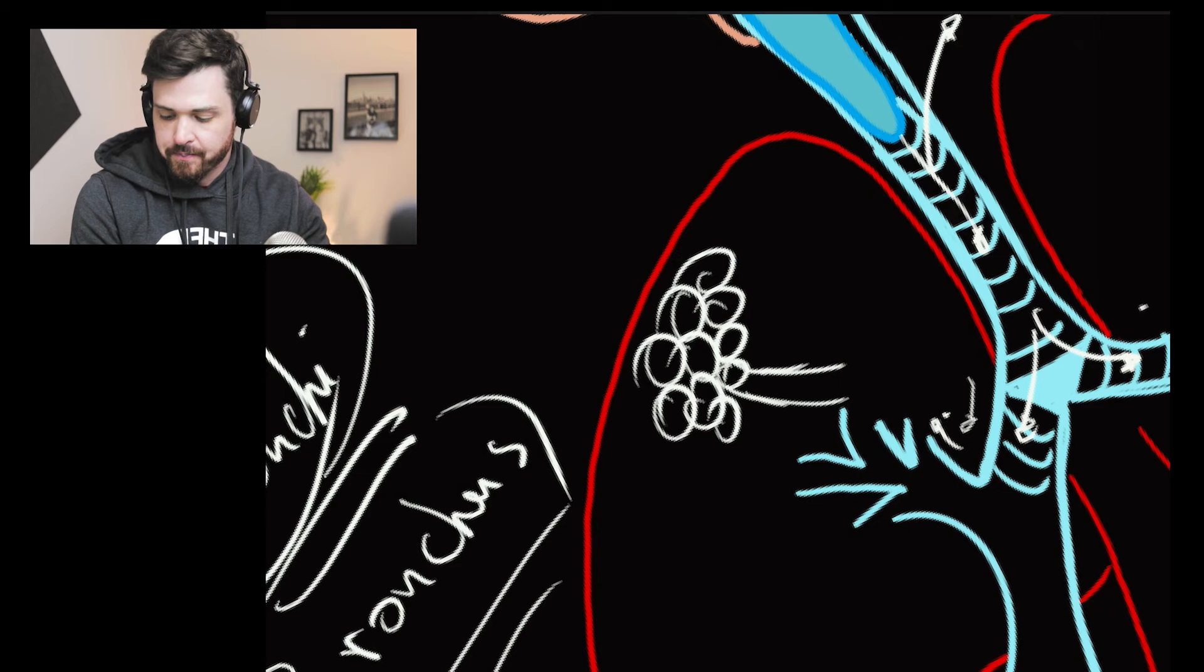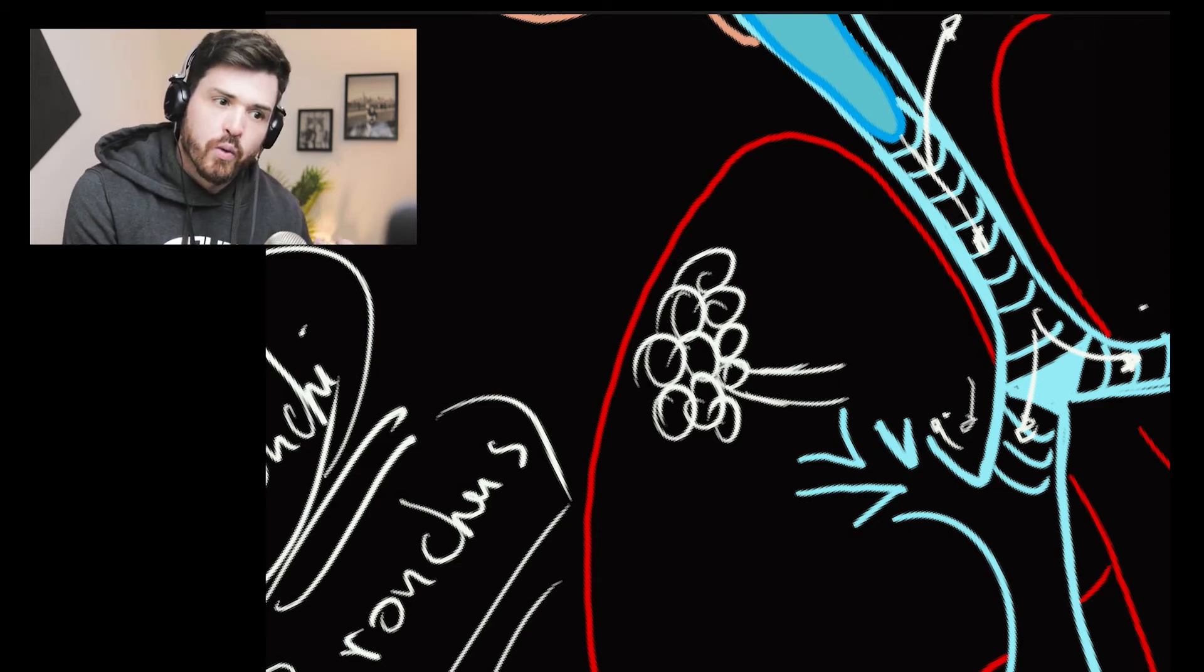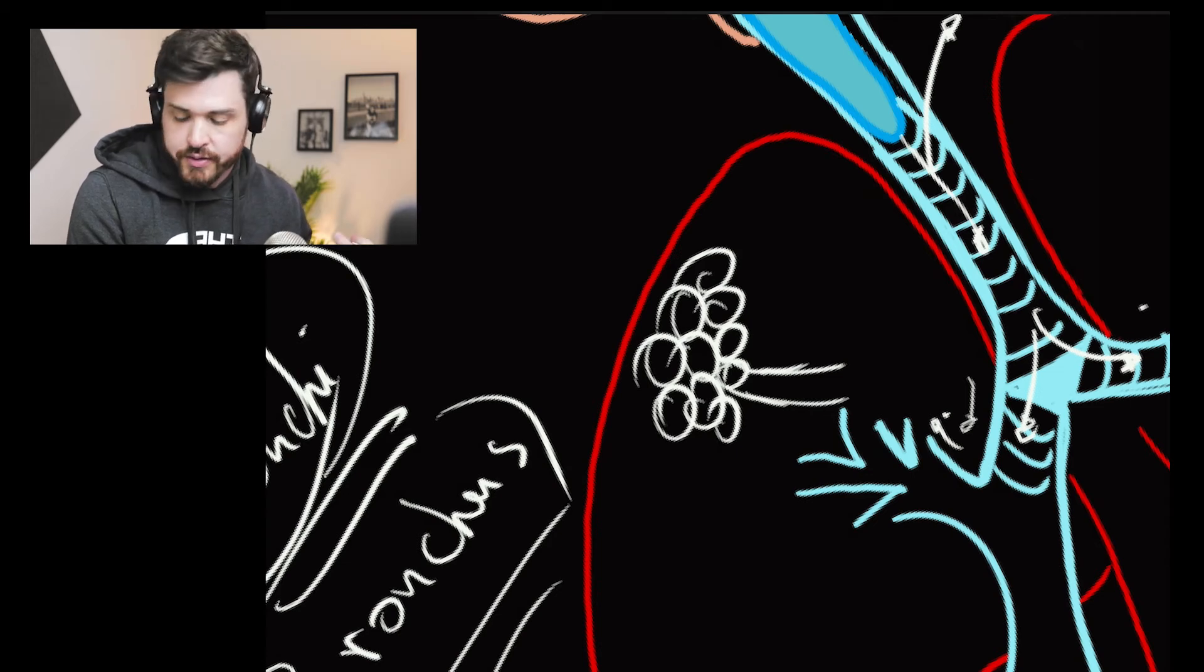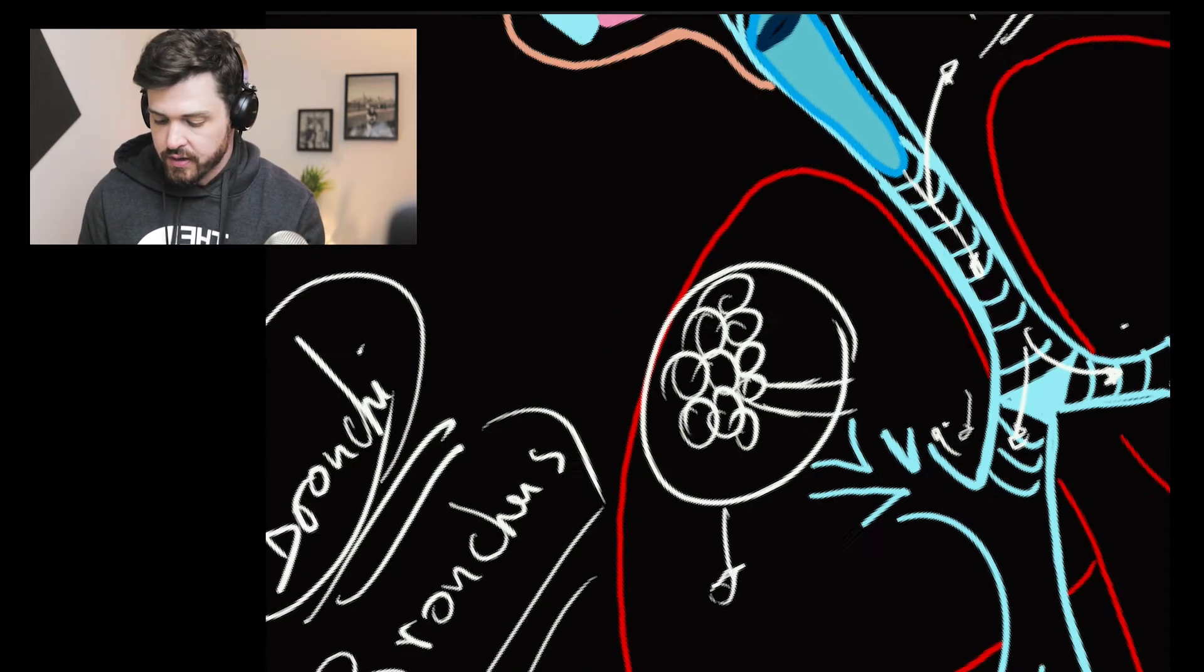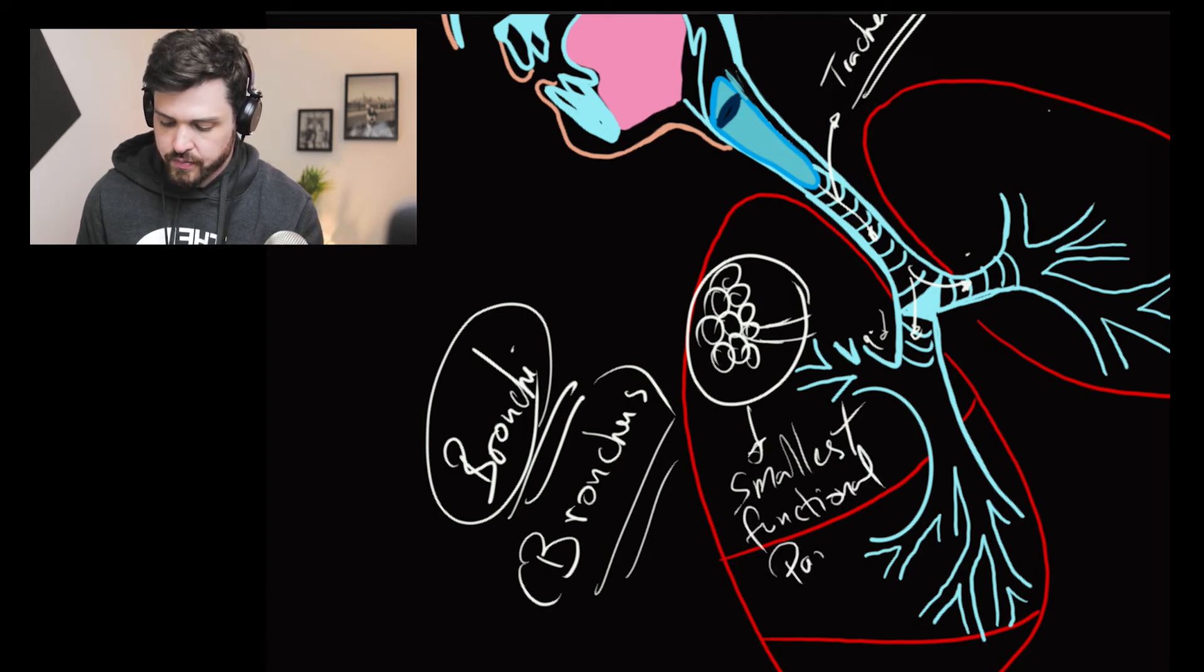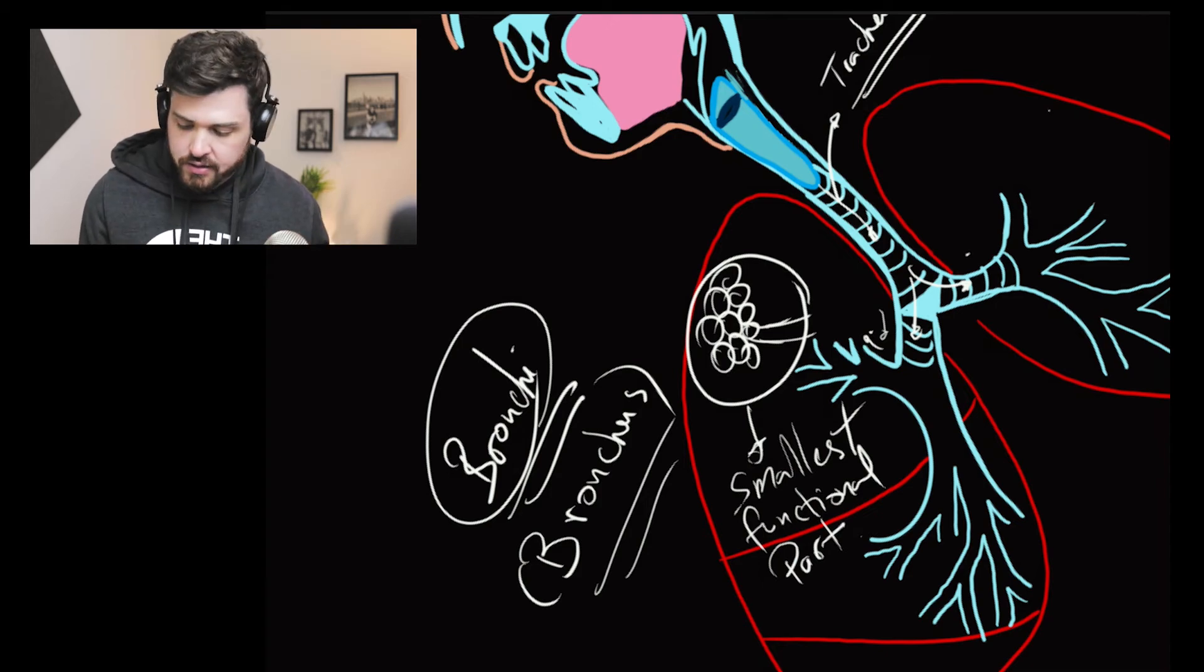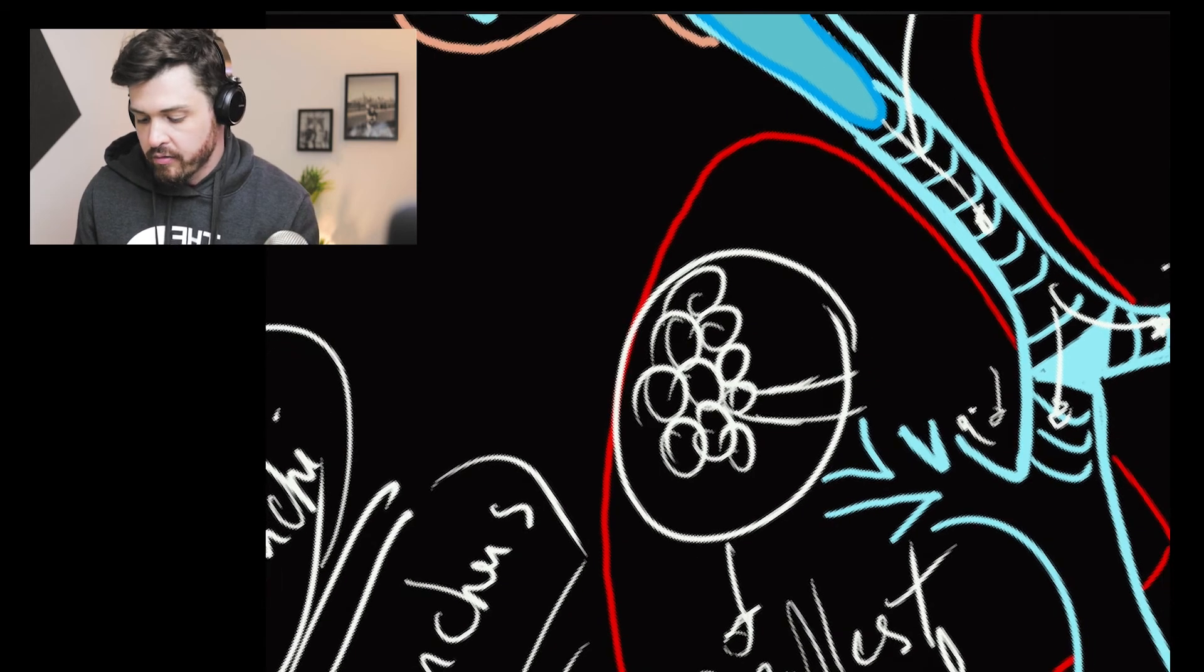Aqui é o alvéolo. Aqui é a parte mais distal, which is the most distal part of the respiratory tract. This is the smallest functional part, the smallest functional part of the respiratory tract. A menor parte funcional do trato respiratório é the alveoli.